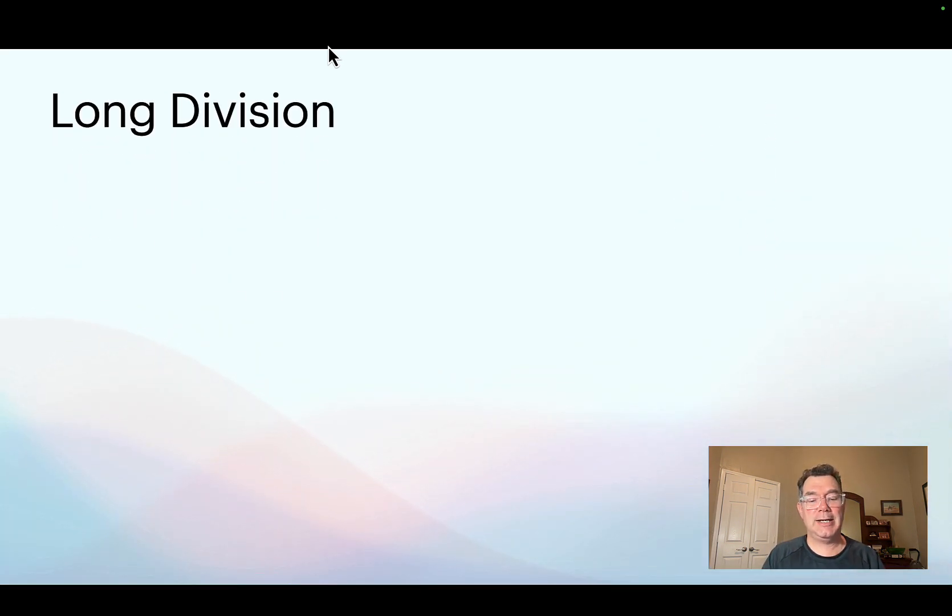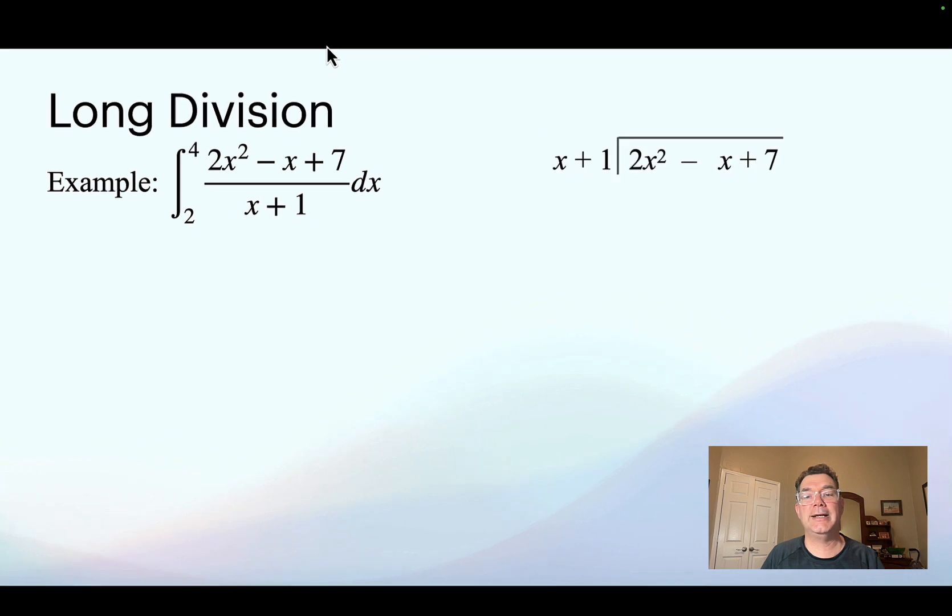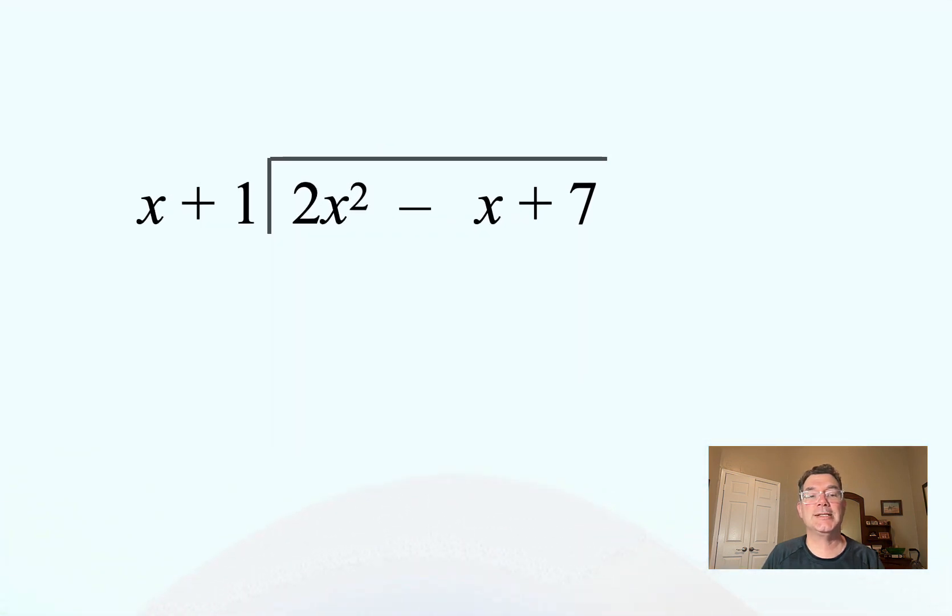All right, let's look at an example where we've got definite integrals. So the same process, I'm going to divide 2x squared minus x plus 7 by x plus 1. So I look at the x, I look at the 2x squared, x goes into 2x squared 2x times. I multiply the entire divisor by 2x and I get 2x squared plus 2x.